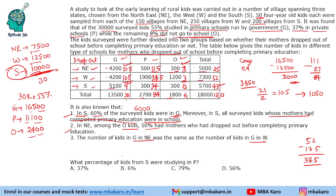The first question asks: what percentage of kids from S were studying in P? From S we had 3,400 plus 300 = 3,700 students in P. 3,700 students out of 10,000 students from S — so it is 37%.